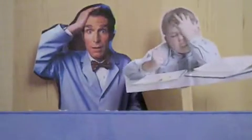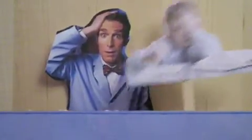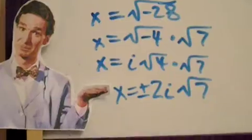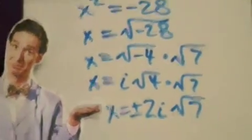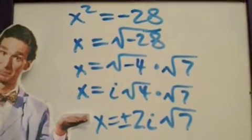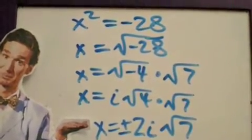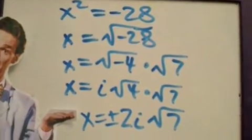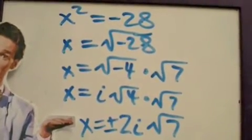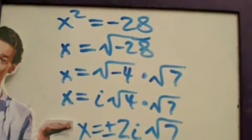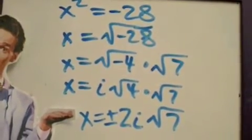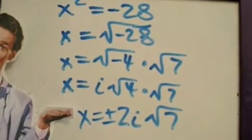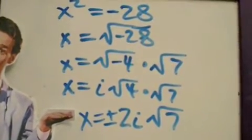Oh man, Bill, I'm doing my homework and I just don't get it. Can you help me out? Sure, Joey. What's the problem? x squared equals negative 28. Okay, so first take the square root of each side. Then you get x equals root negative 28. Then separate the root negative 28 into root negative 4 and root 7. Then take the i out of root negative 4. Then you'll end up with x equals i root 4 times root 7. Then take the square root of 4. Then you'll end up with x equals plus or minus 2i root 7. Oh, okay, thanks. I get it now. No problem, Joey.